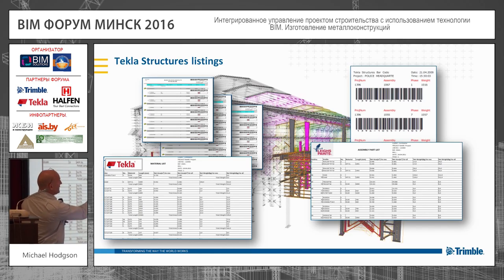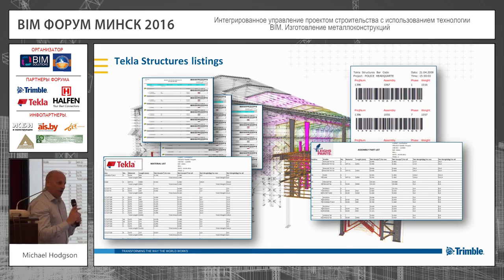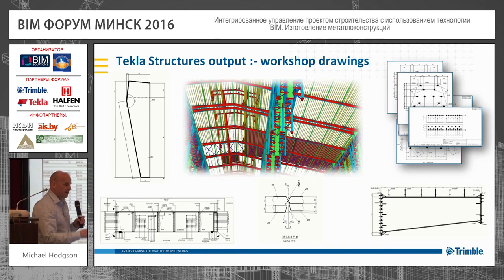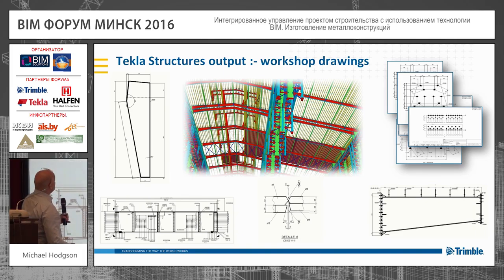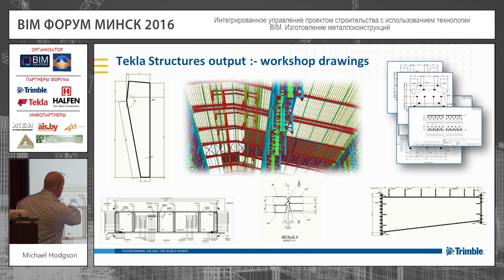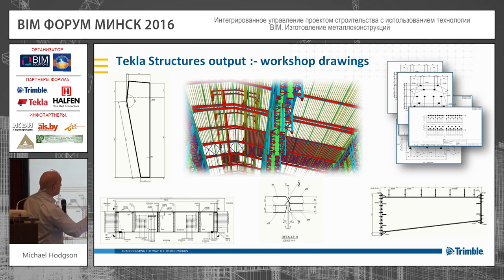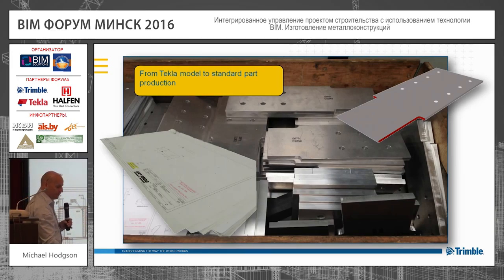If the model changes, these material lists automatically update themselves, so anything you do in Tecla, the information is always correct. Then of course the workshop drawings — they can be very complex but it still details them correctly: layouts, PB sections, individual drawings, weld preparations, all shown on the drawings. These drawings are used to manufacture those parts if you're making them manually. We can also create sections, plans, elevations, three-dimensional views — any kind of view you want.